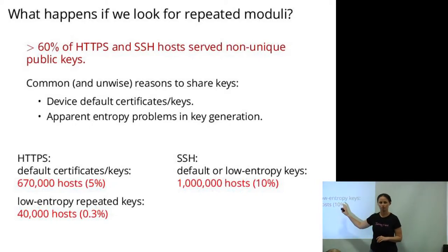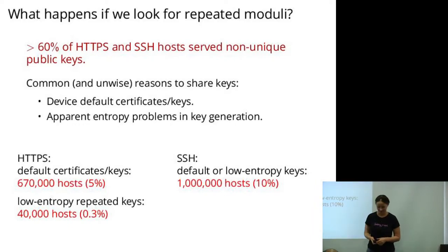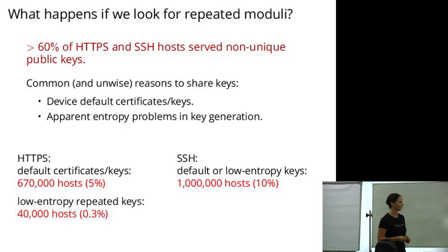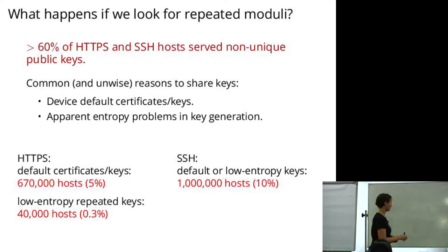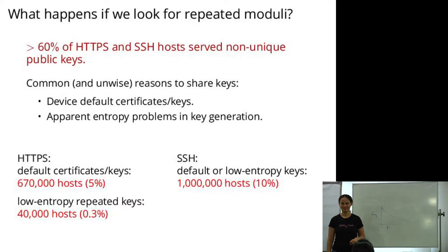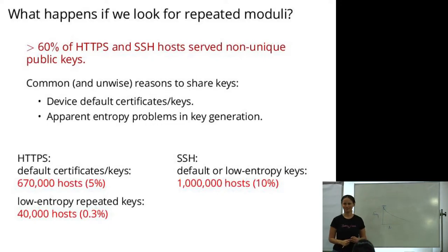A lower bound for SSH is about 10%, or a million hosts, that have one or the other of their SSH keys in this category. The intuition for measuring entropy: if I look for all certificates with a particular device brand subject, and the frequency of distinct moduli ordered from most to least common looks like a sharp drop-off — one key shared by a thousand devices, the next by 900 — that looks like somebody has problems generating keys. This is totally non-rigorous, but it's the intuition.